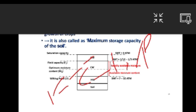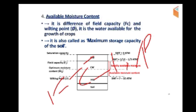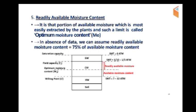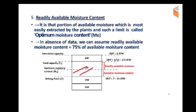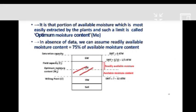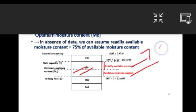The difference in moisture content between field capacity and wilting point is the maximum storage capacity. The readily available moisture content is the portion of available moisture most easily extracted by the plants, and such a limit is called optimum moisture content. If no data is available, we assume readily available moisture content is 75% of available moisture content.